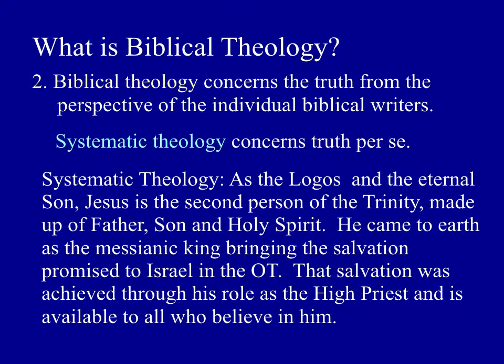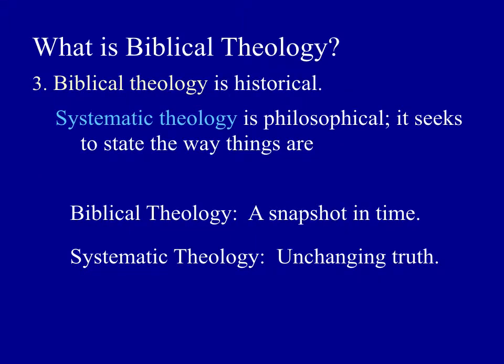Here's a third distinction between the two: biblical theology is historical, whereas systematic theology is primarily philosophical — it seeks to state the way things are. Philosophy is really the study of truth — what is the nature of reality? Biblical theology is much more historically focused, a snapshot in time of what an individual author or particular period taught or believed. Systematic theology is much more about unchanging truth: what is truth per se?